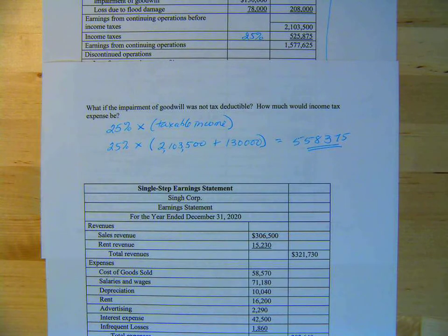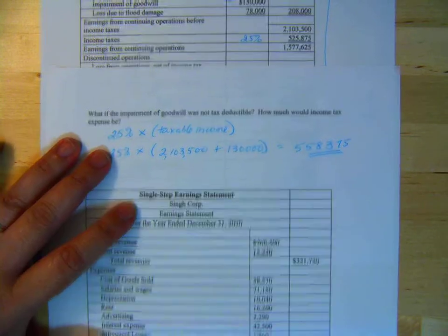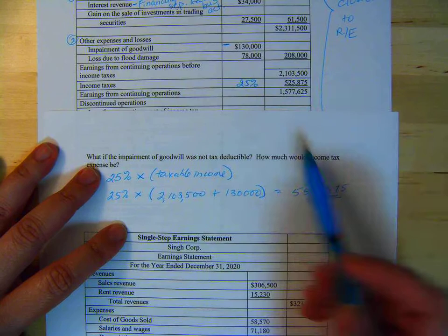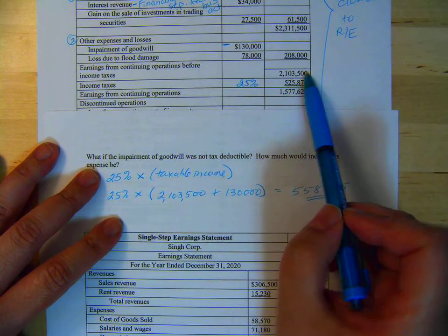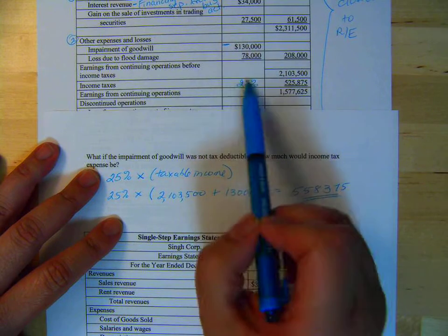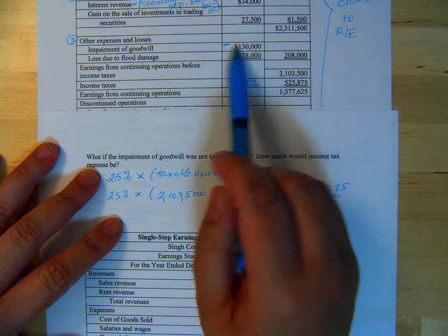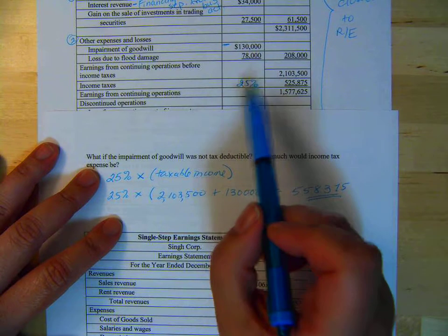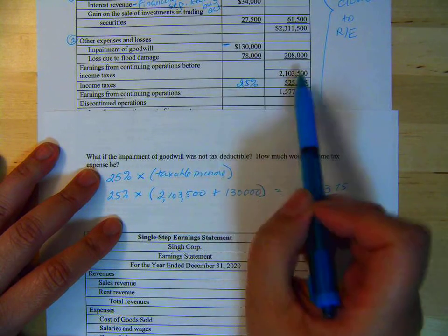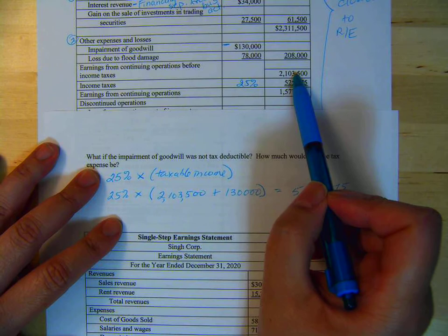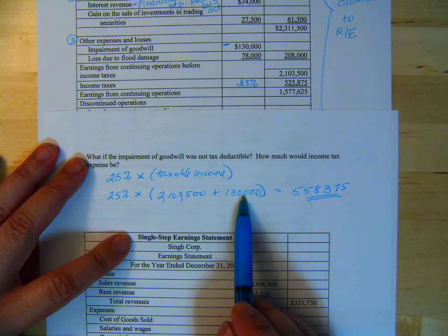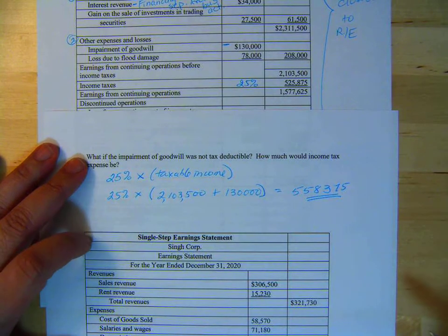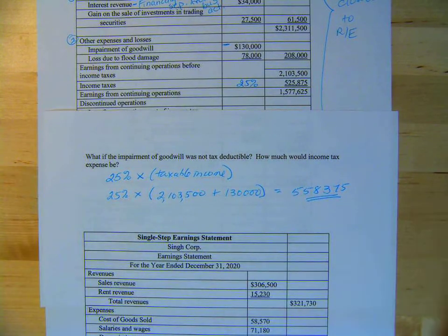Hopefully that makes sense. You're taking this 2,103,500 that we used earlier, but I've got to get the goodwill impairment out of here for my tax calculation. Because it doesn't have anything to do with tax. So I took it off to get here, and I have to add it back to figure out my taxable income, and then multiply it by the tax rate.